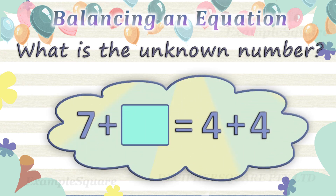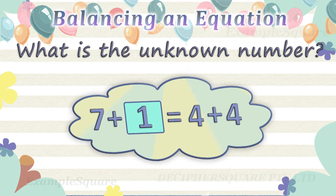In this equation, the left side is 7 plus an unknown number and the right side is 4 plus 4. 4 plus 4 on the right side equals 8. For this equation to balance correctly, the left side should also be equal to 8. The left side is 7 plus an unknown number. 7 plus 1 equals 8, so the unknown number here is 1.